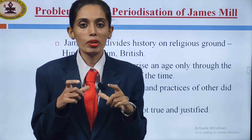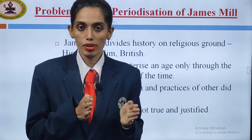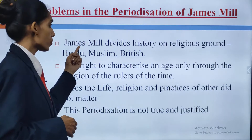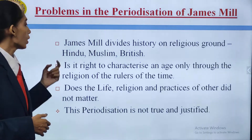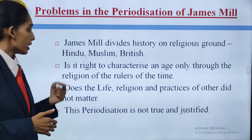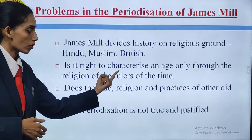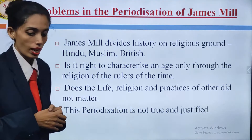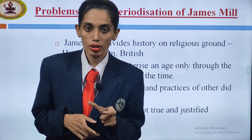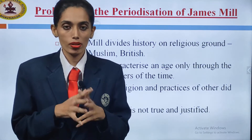Last we had seen James Mill had divided the periodization into three parts: Hindus, Muslims and Britishers. Was this periodization correct? James Mill divides history on religious grounds — Hindu, Muslim, British. Is it right to characterize an age only through the religion of the rulers of the time? Whether it is right to divide like this on the basis of religion?